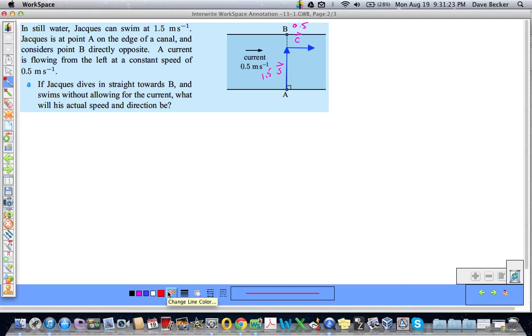And then we also know, actually, let's see. This resultant vector will give me the sum of Jacques's speed and the current. Well, if he's going, looking directly across at B, and this is going directly from the left, I know that right here, I have a right angle. So that means if I can find, well, let's call this R, the resultant vector R, I can use the Pythagorean theorem.